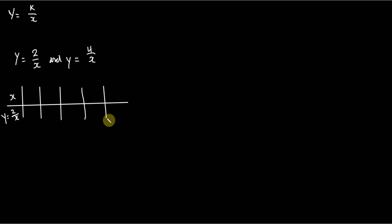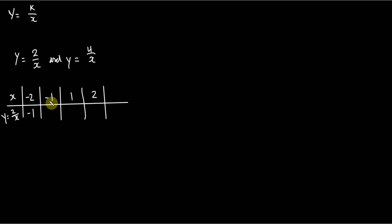We only need a couple of values - we don't need anything too comprehensive. So we'll just say x equals negative 2, negative 1, 1, and 2. When x is negative 2, substituting into y equals 2 over x, we get negative 1. When x is negative 1, we get negative 2. When x is 1, we get 2, and when x is 2, we get 1.